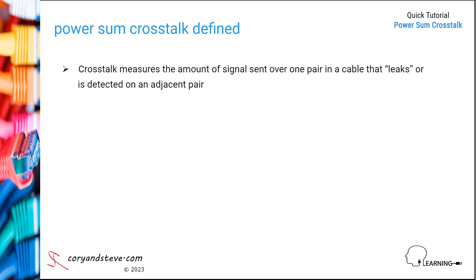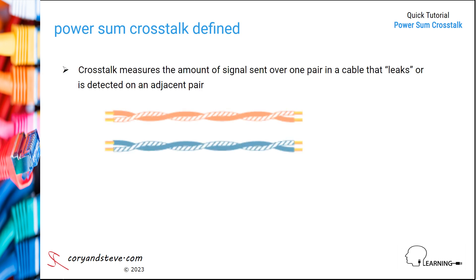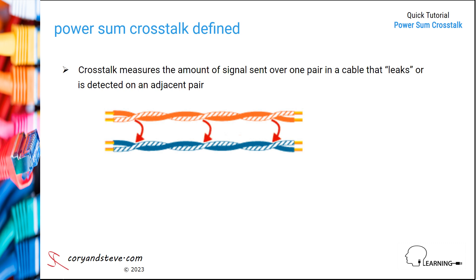Let's begin with a definition of PowerSum Crosstalk. Crosstalk measures the amount of signal sent over one pair in a cable that leaks or is detected on an adjacent pair. If there's too much leakage, it can affect signal integrity on the adjacent pair.